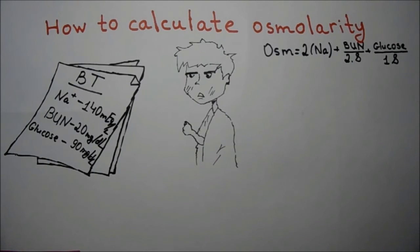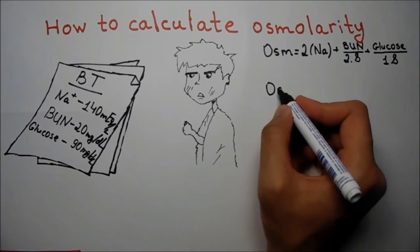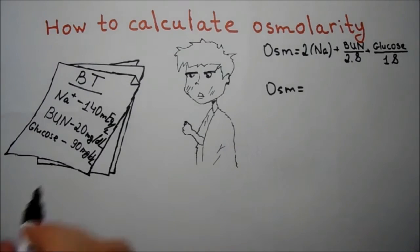Now let's try to calculate blood osmolarity using this formula. These are lab values. As you see, the patient's sodium level is 140 mEq per liter.